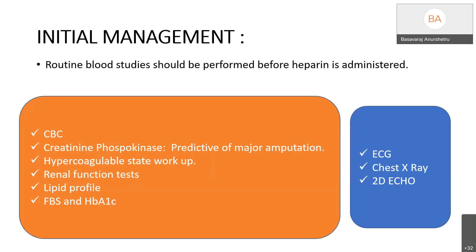As soon as the patient arrives in the emergency department, routine blood studies should be performed before heparin is administered: CBC, creatine phosphokinase (which is a predictor of major amputation), hypercoagulable state workup, renal function tests, lipid profile, and blood sugar. Radiological studies including ECG, chest X-ray, and 2D echocardiography should also be done to rule out ventricular clots.